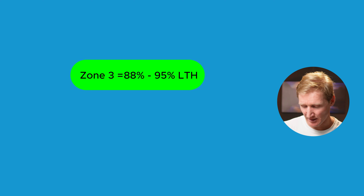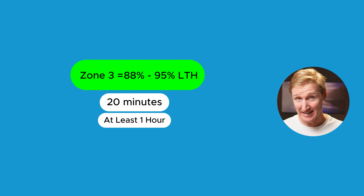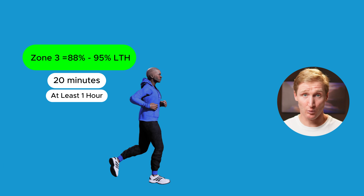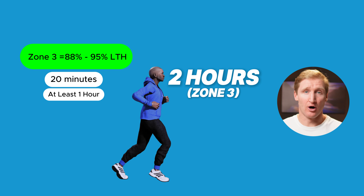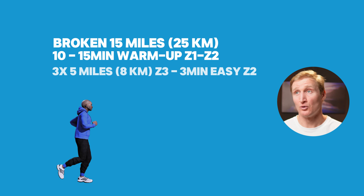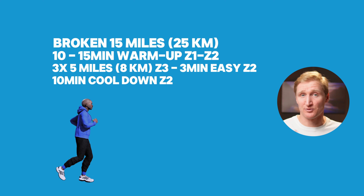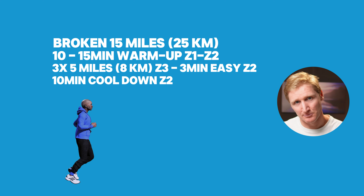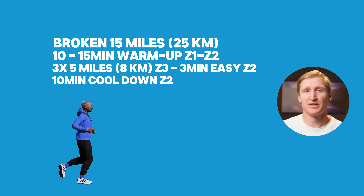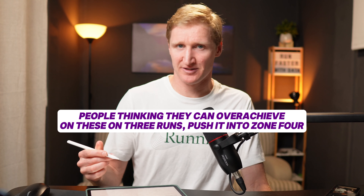Starting from a minimum of 20 minutes, we want to accumulate at least an hour of Zone 3 work when building towards these events. For a marathon specifically, you want to build to at least two hours of Zone 3 — what I call a broken run — around 25k or 15 to 16 miles of Zone 3 work broken into 20-minute chunks, stretching into six-mile or three-mile segments through the build phase.